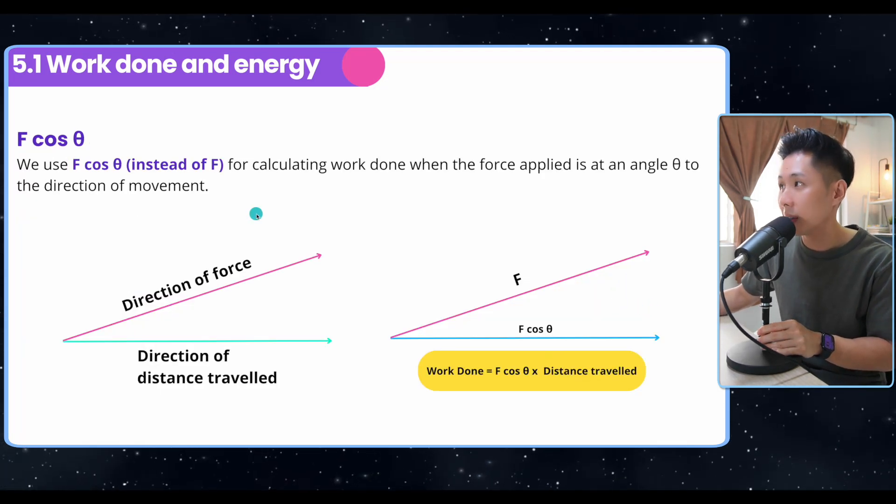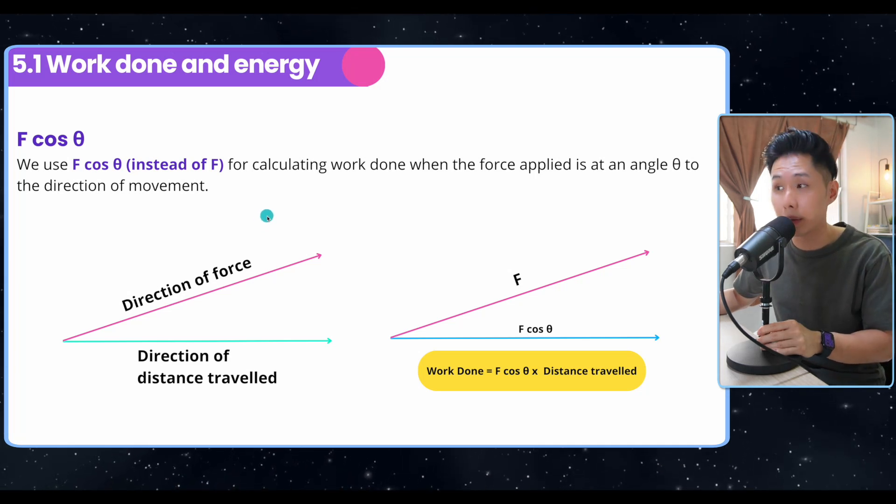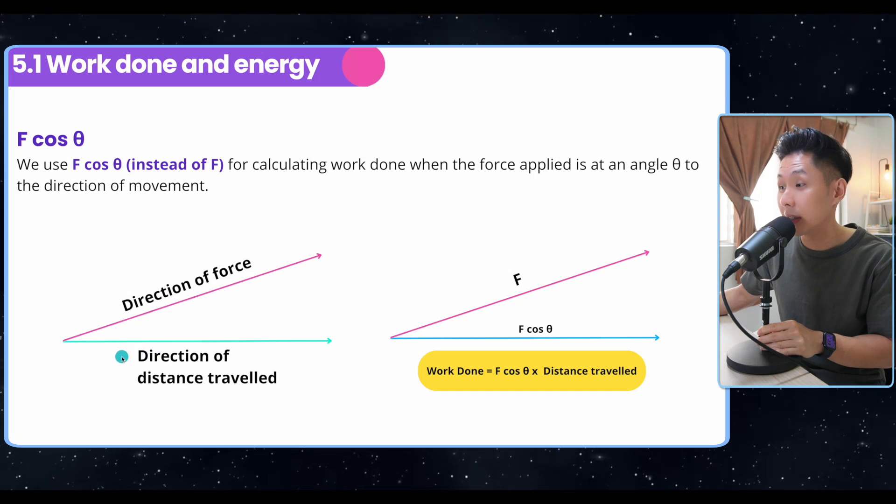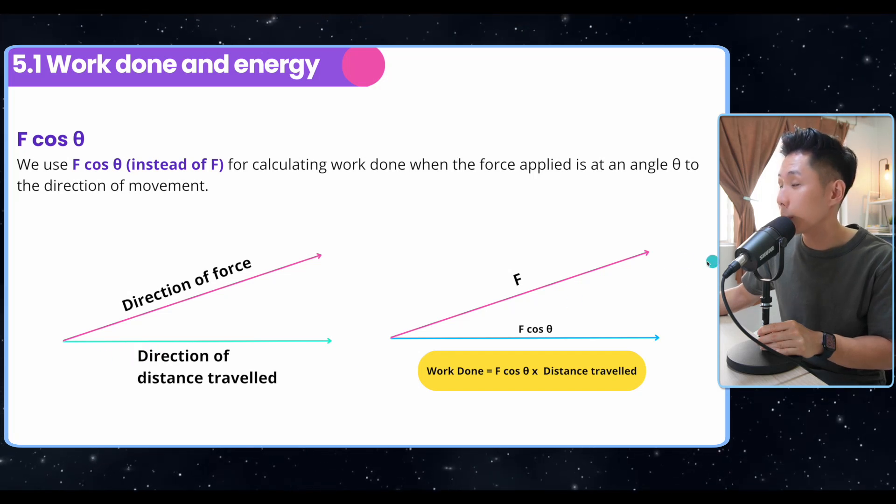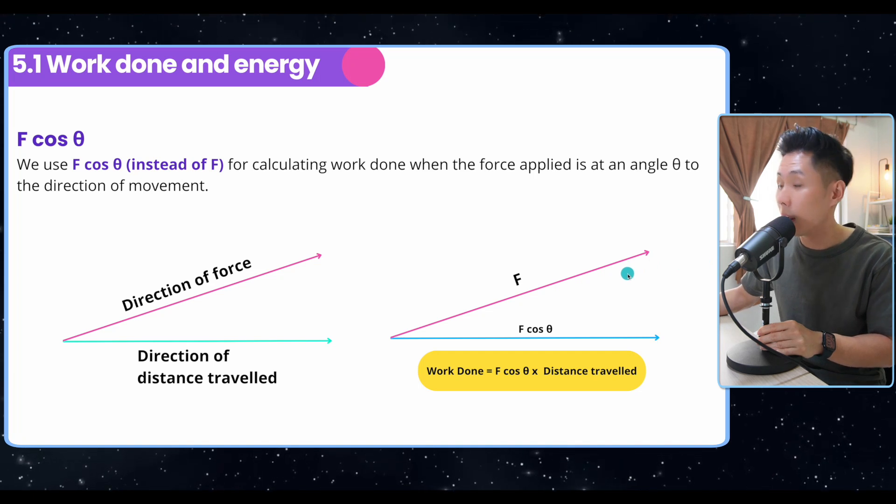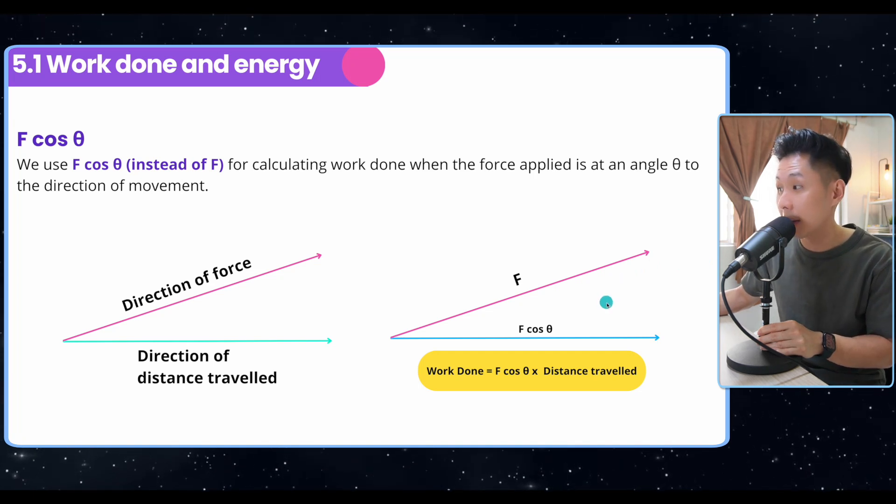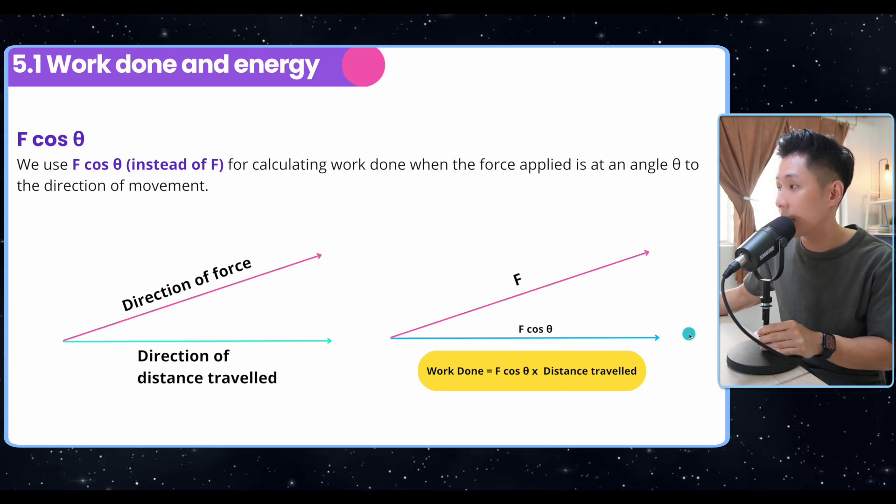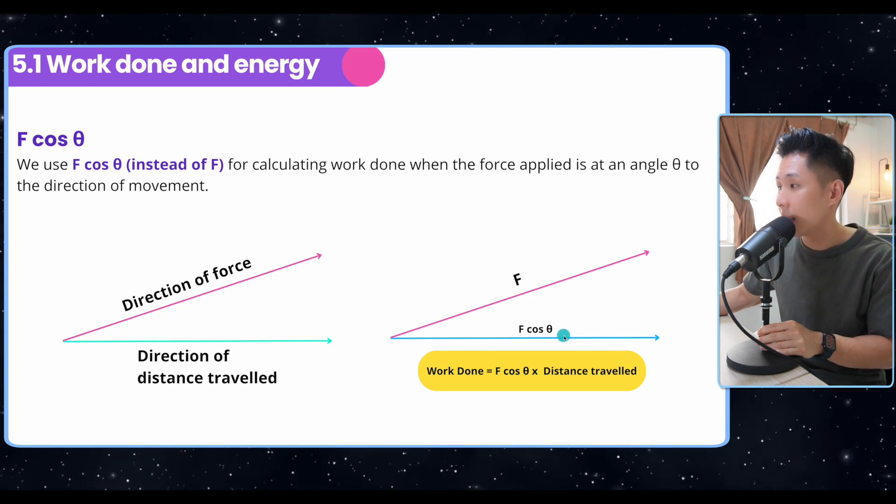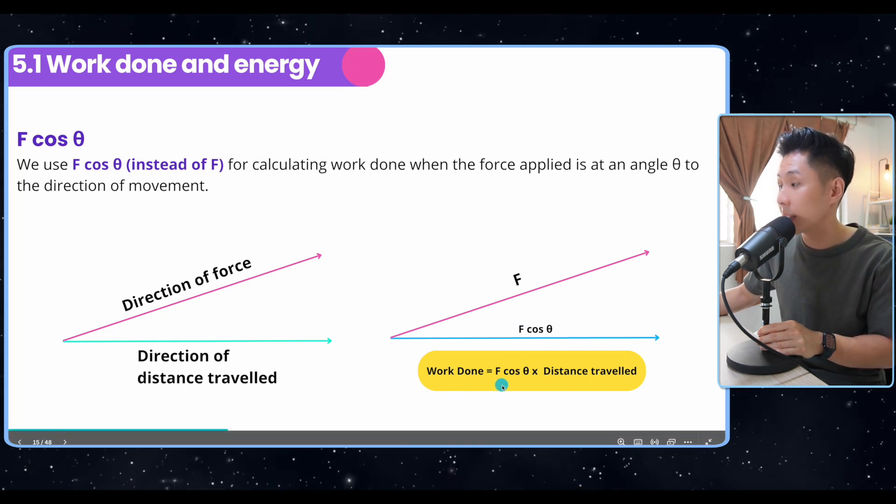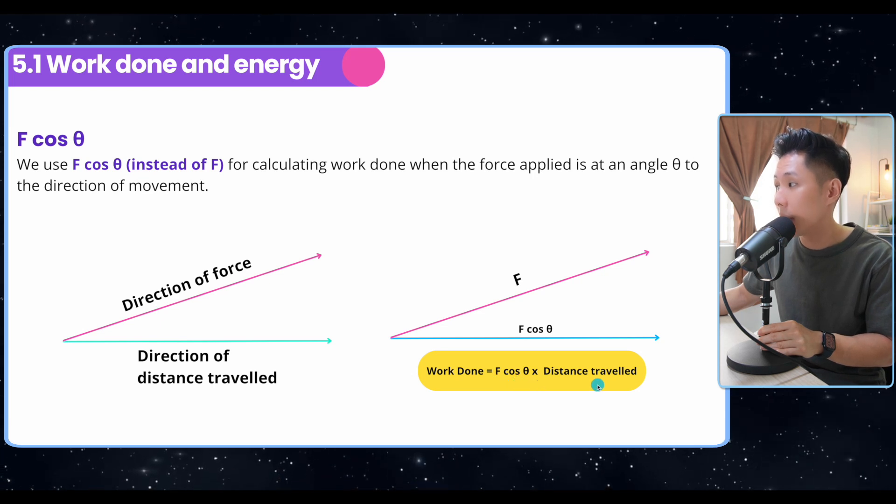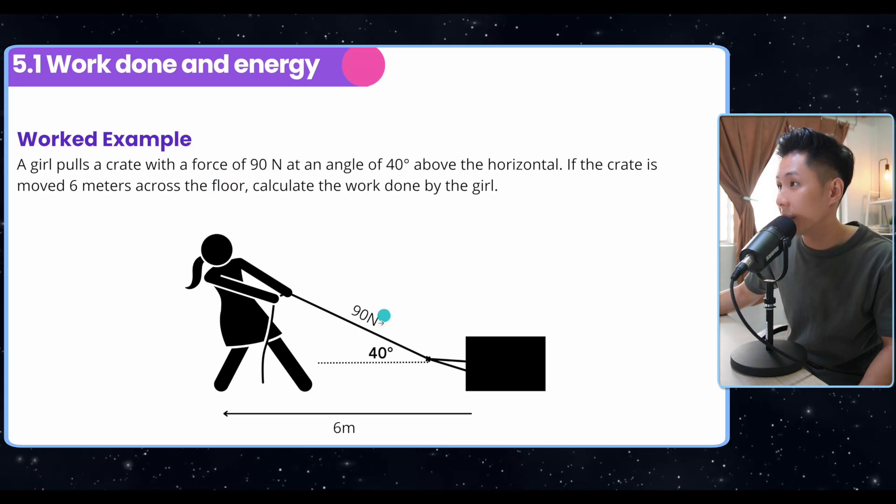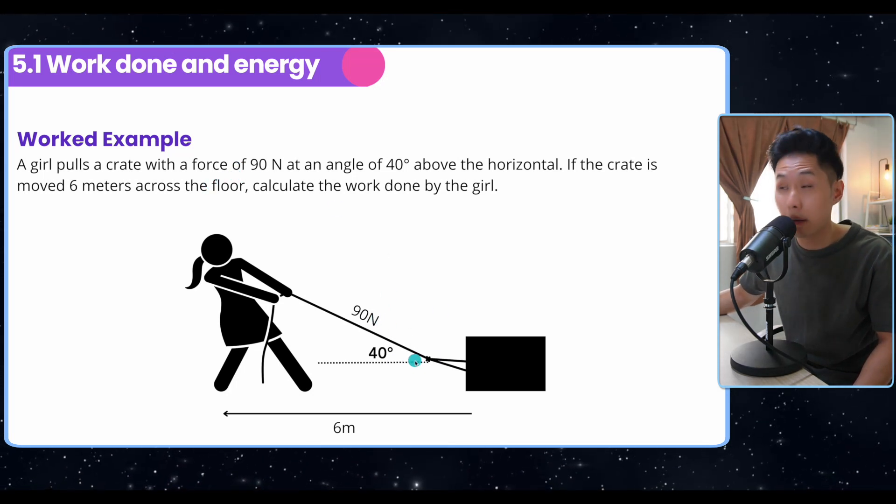Now there are also times when force is not applied directly at the distance travel. For example, direction of force can be diagonal. The direction of distance travel is horizontal. So that's why we have to break down the force into its horizontal component using trigonometry. We know that the force across the horizontal component can be calculated using F cos θ. That's why the work done formula sometimes can be F cos θ multiplied by the distance traveled. So let's solve a question to understand it. A girl pulls a crate with a force of 90 Newton at an angle of 40° above the horizontal.